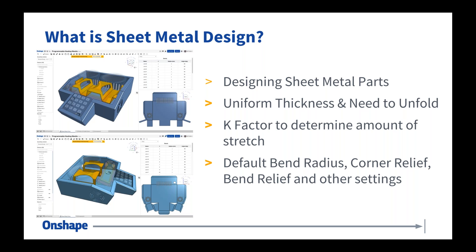Sheet metal also needs to determine the amount of stretch in the design. Every time you create a bend in your sheet metal part, it stretches to a degree, and that stretch is determined by a factor called K factor. So it's more than just uniform thickness and unfolding — it also has to accommodate for the amount of stretch that happens when you bend. There's a lot of math that goes into figuring out that stretch, but it's a very important part of sheet metal design. Other things like default bend radii, corner reliefs, and bend reliefs make sheet metal design simpler. But the key things are uniform thickness, ability to unfold, and K factor.